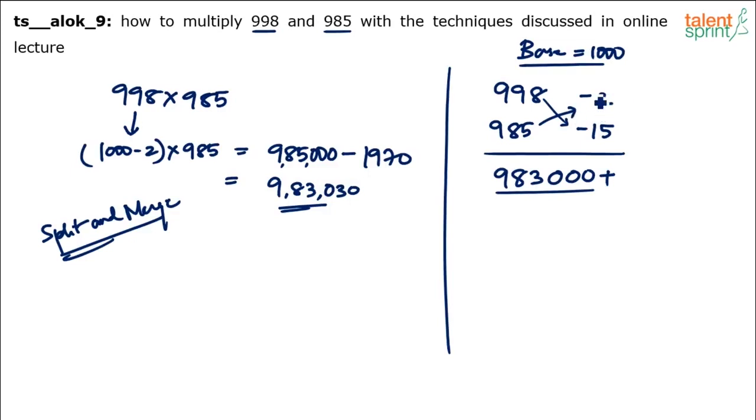Plus how much? Product of these two. Minus 2 into minus 15 is what? Plus 30. So add 30. So your answer will be 983,030. Very easy to apply when the numbers are both close to 1000 or both close to 100 or close to 10,000 and so on. So you can use any method, either of these two methods, depending on what is comfortable for you. It's your choice always.